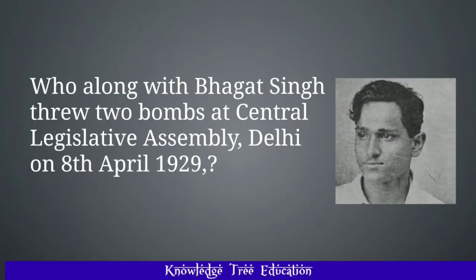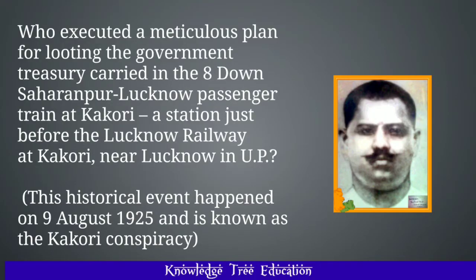Who along with Bhagat Singh threw two bombs at the Central Legislative Assembly, Delhi, on 8 April 1929? The answer is Batukeshwar Dutt. Who executed a meticulous plan for looting the government treasury carried in the 8-down Saharanpur-Lucknow passenger train at Kakori, a station near Lucknow, UP? This historical event happened on 9th August 1925 and is known as the Kakori Conspiracy. The answer is Ram Prasad Bismil.